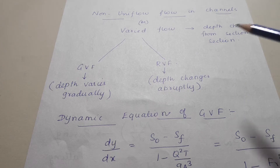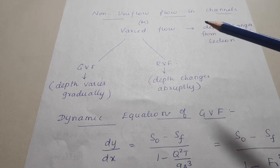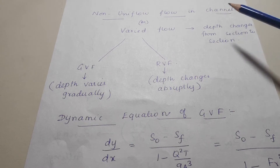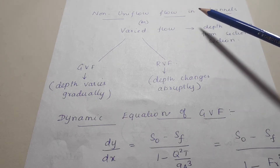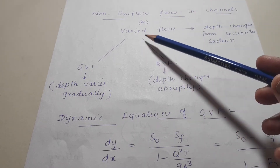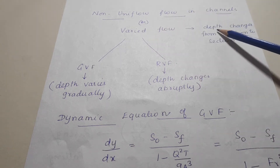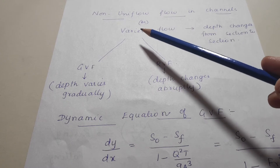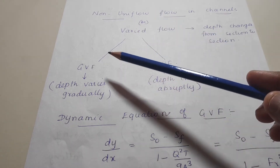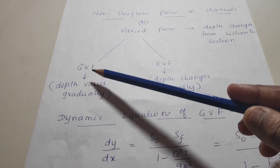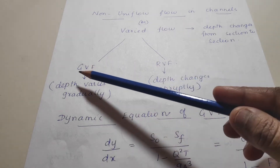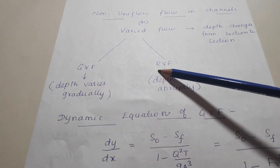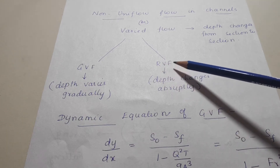In this we are going to study about non-uniform flow in channels. Non-uniform flow can be called varied flow, where the depth changes from section to section. There are two types of varied flow: GVF (gradually varied flow) and RVF (rapidly varied flow).